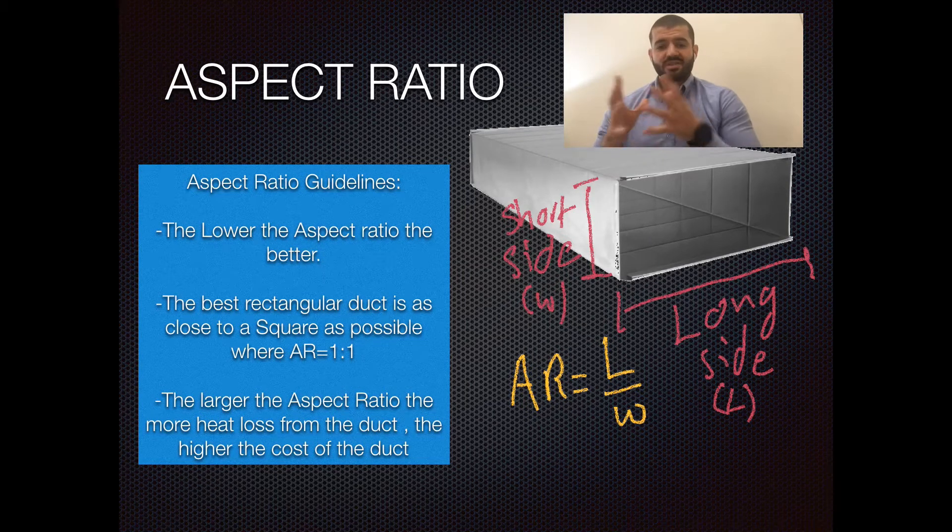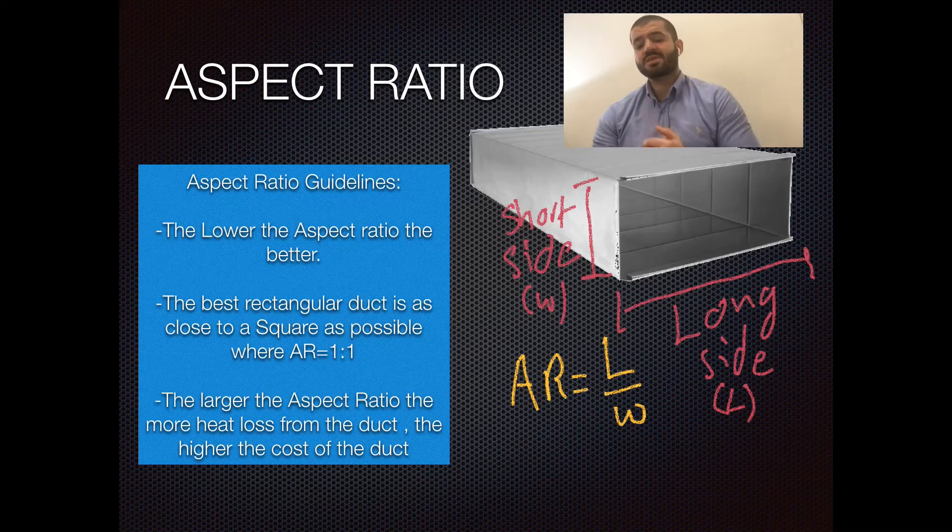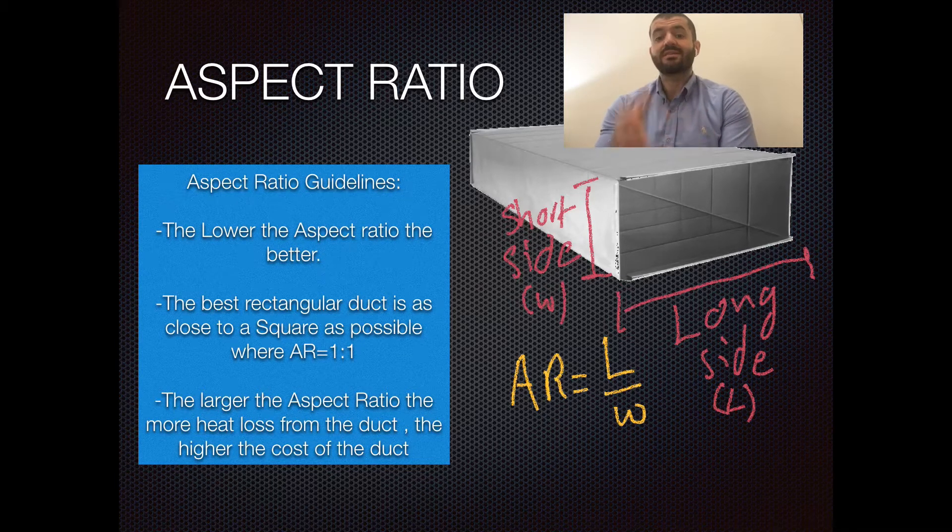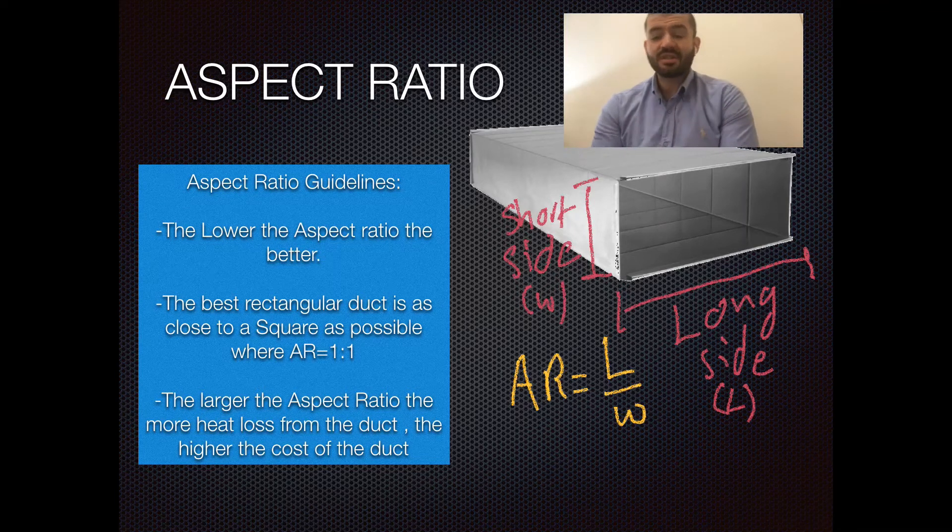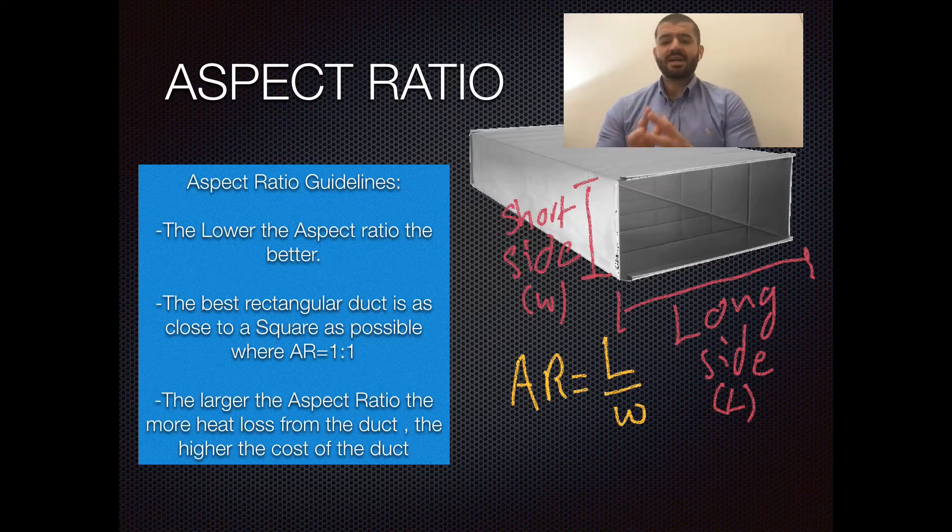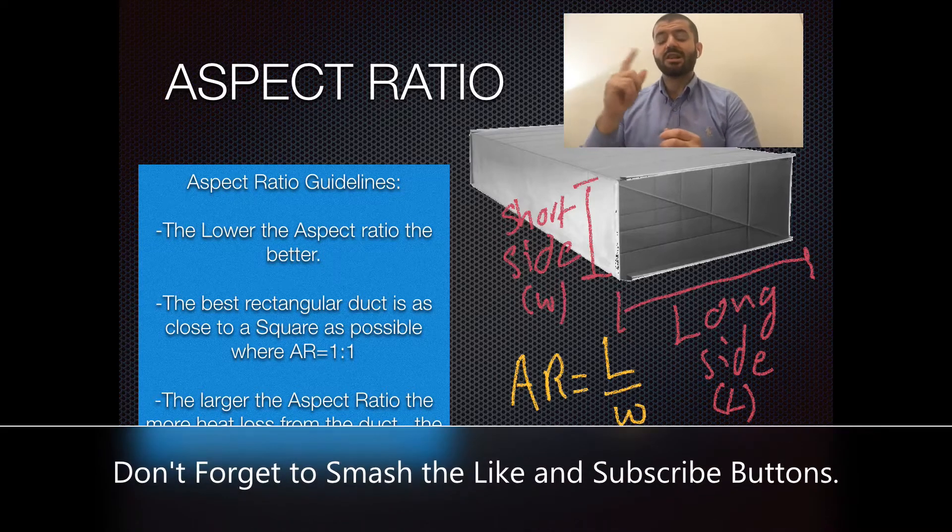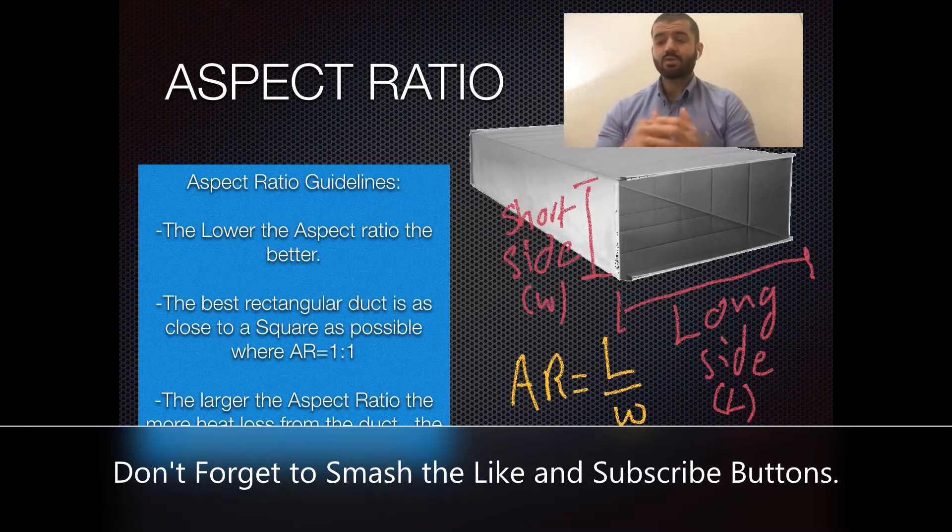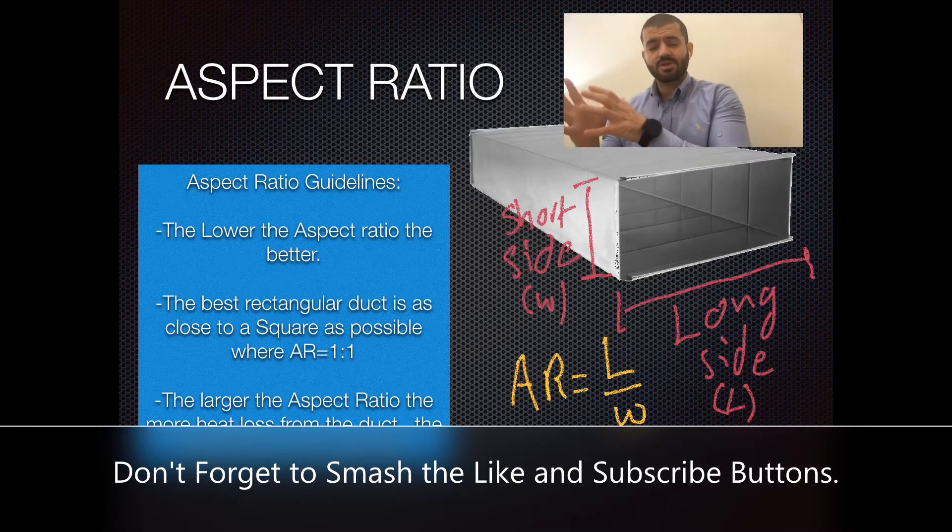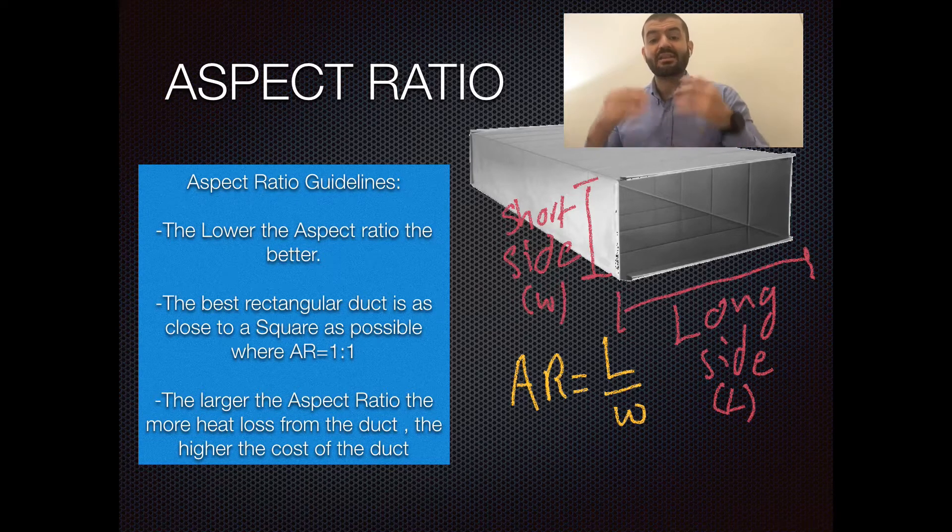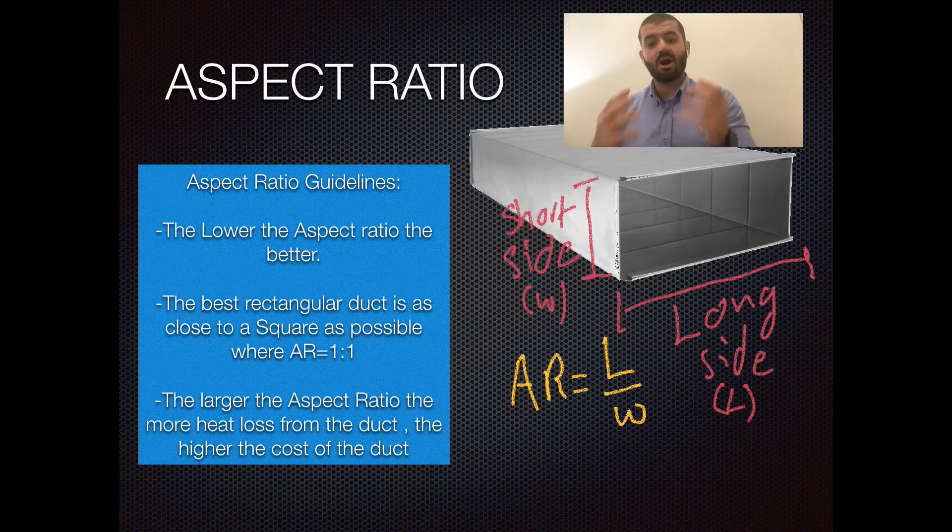Now, the aspect ratio is the ratio of the long side of the duct to the short side of the duct. Let me tell you why it's a very important parameter that should be taken into account during the duct design process in general, and especially in the duct sizing process. As you can see from the formula, you have the long side at the top and the short side at the bottom. From a mathematical point of view, the larger the long side and the smaller the short side, you'll have a higher aspect ratio. High aspect ratios mean your air flowing through the ducting system will be in contact heavily with the walls of the duct.